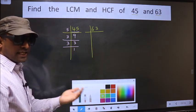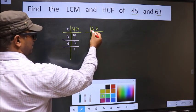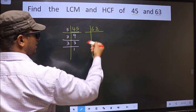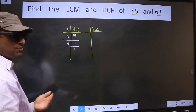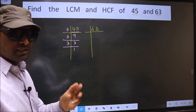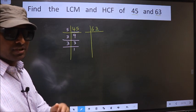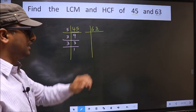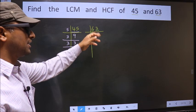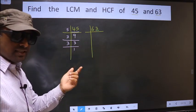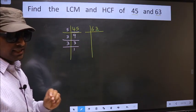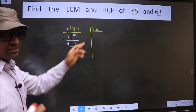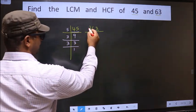Now the other number, 63. The last digit is 3, so this number is not divisible by 2. Next, the prime number 3. To check divisibility by 3, we should add the digits: 6 plus 3 equals 9. Is 9 divisible by 3? Yes. So this number is also divisible by 3, so we take 3 here.